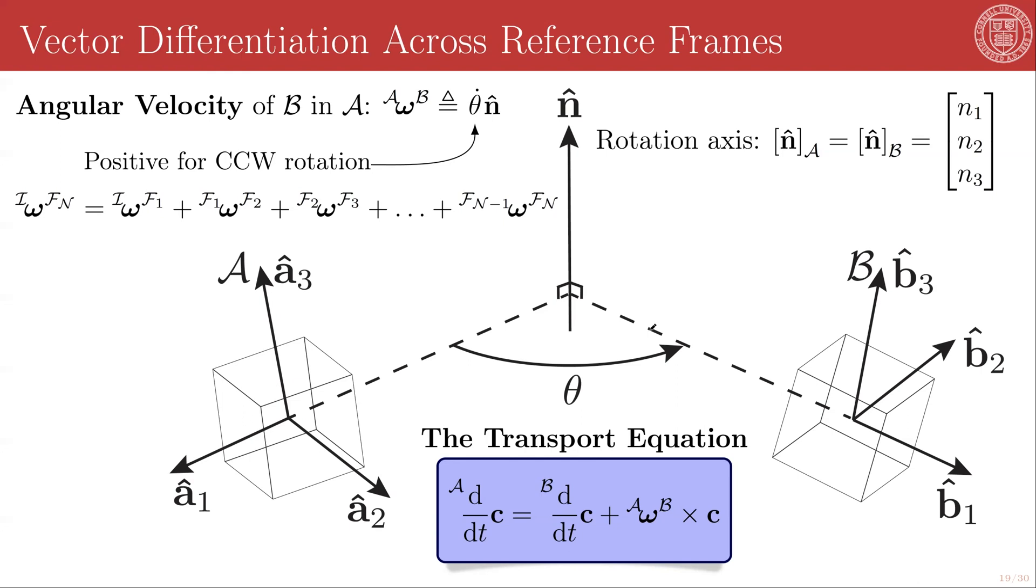In fact, you only need three scalar values to represent the simple rotation. And the simplest possible encoding of it is an axis of rotation, which we'll call n hat, so it's a unit direction in space, and an angle of rotation.